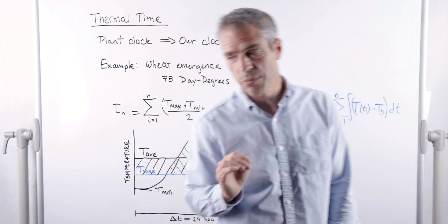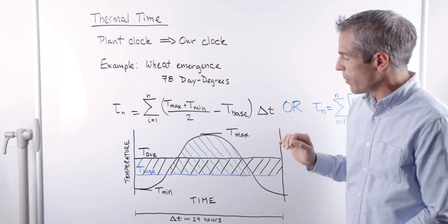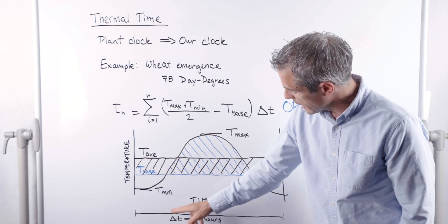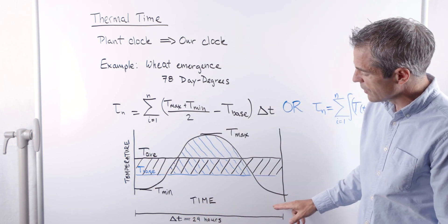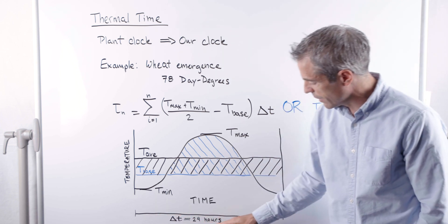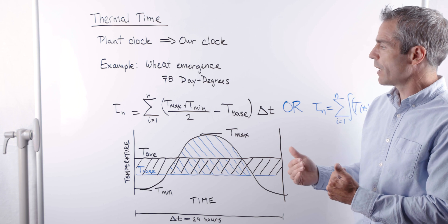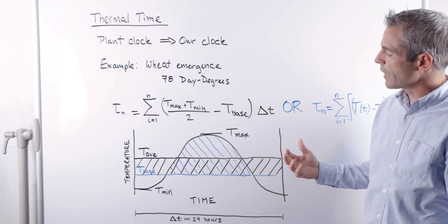So we're going to learn about that in another talk. But here, let's go to this graph. We have temperature on the y axis and time on the x axis. The total time here, of course, is just 24 hours. So this is our daily step where we're collecting this information about thermal time.